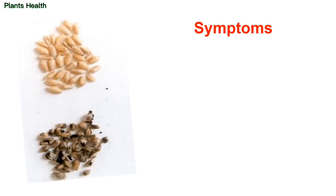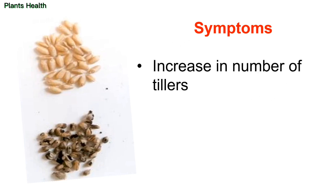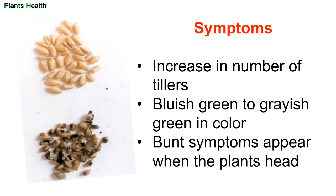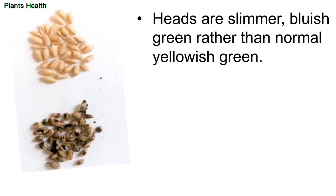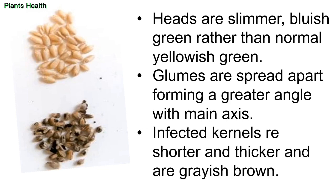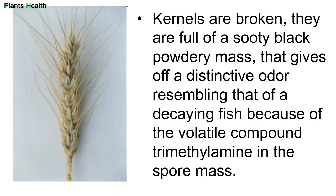Other symptoms include an increase in the number of tillers and a bluish-green to grayish-green color. Bunt symptoms appear when plants head. Heads are slimmer and bluish-green rather than normal yellowish-green. Glumes are spread apart, forming a greater angle with the main axis. Infected kernels are shorter, thicker, and grayish-brown, broken and full of sooty black powdery mass, giving off a distinctive odor resembling decaying fish due to the volatile compound trimethylamine in the spore mass.